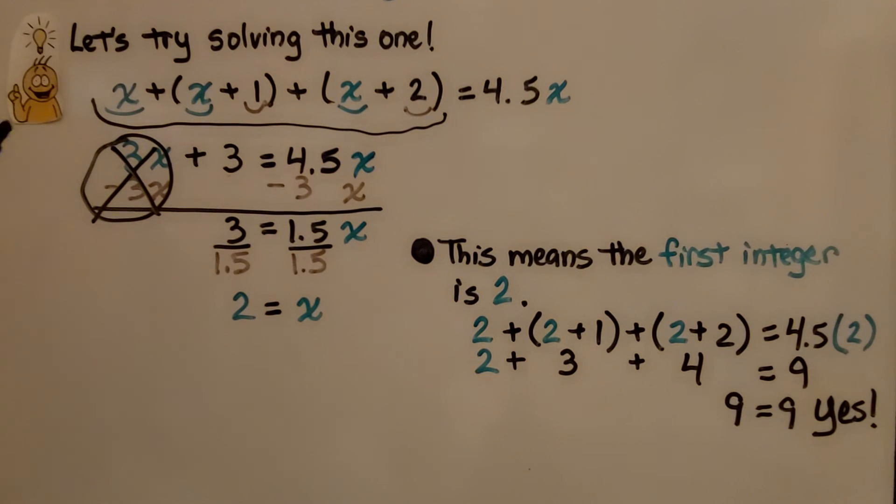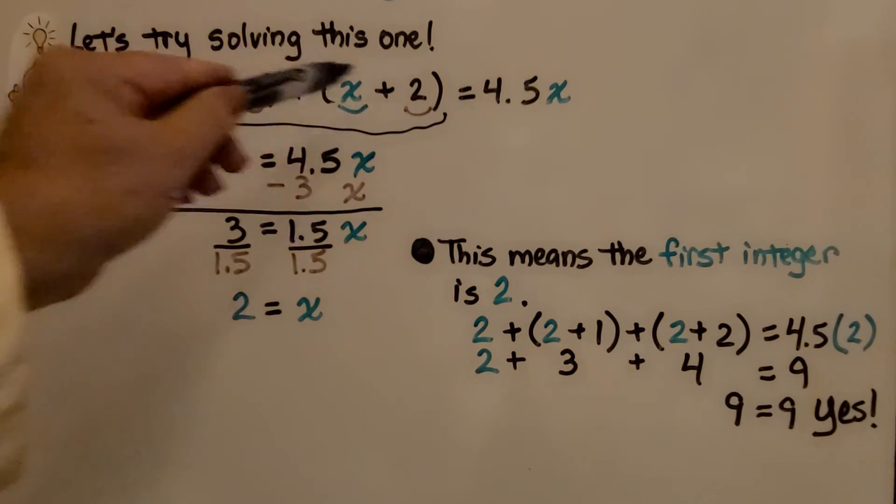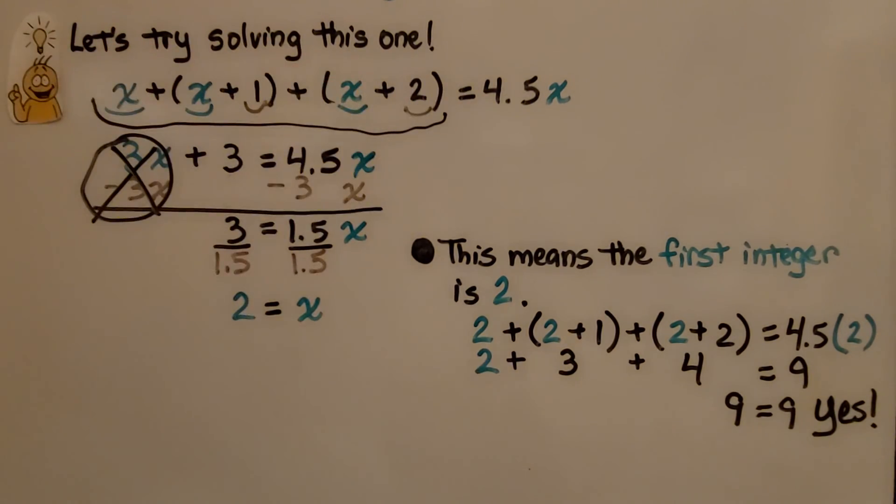So just remember, whenever you see an equation like this, it's looking for consecutive integers. It could be 2, 3, 4. Because we're adding 1 to the original number, then we're adding 2 to the original number. That's 3 consecutive numbers. You might see equations like this where it's saying consecutive even numbers or consecutive odd numbers.